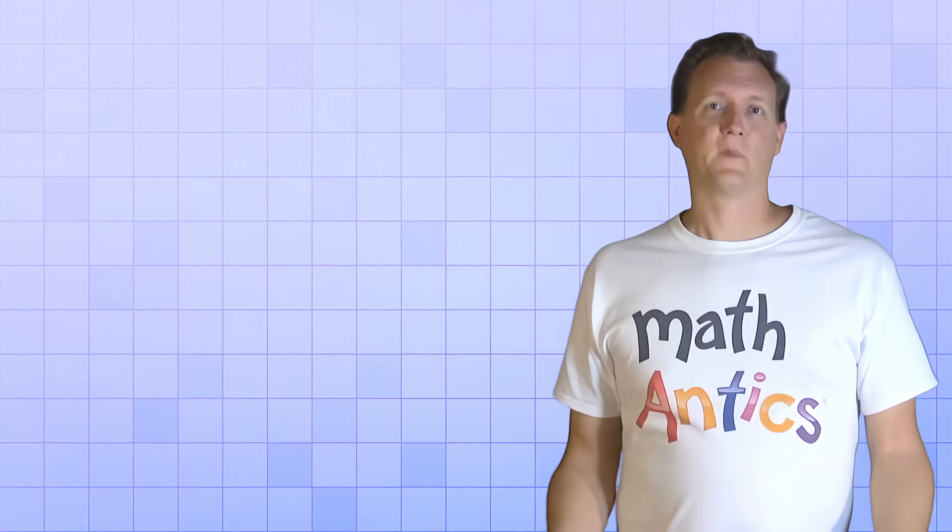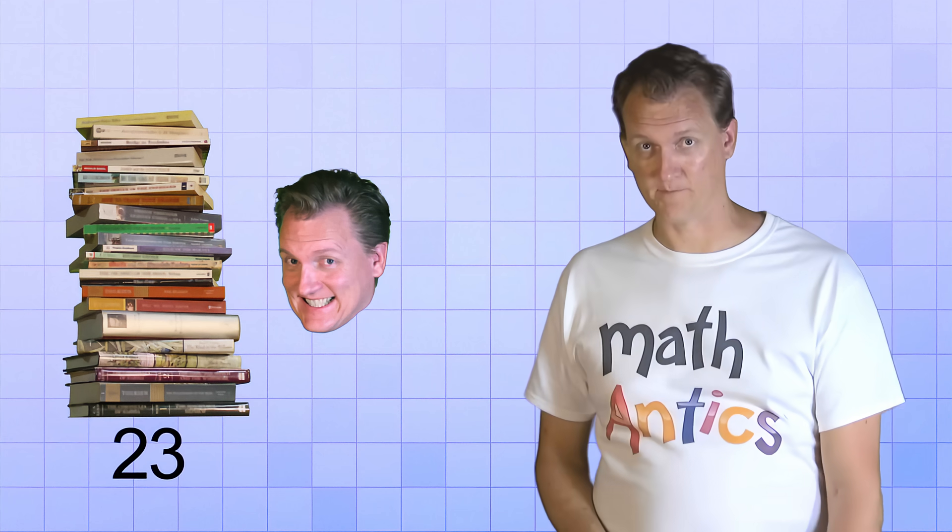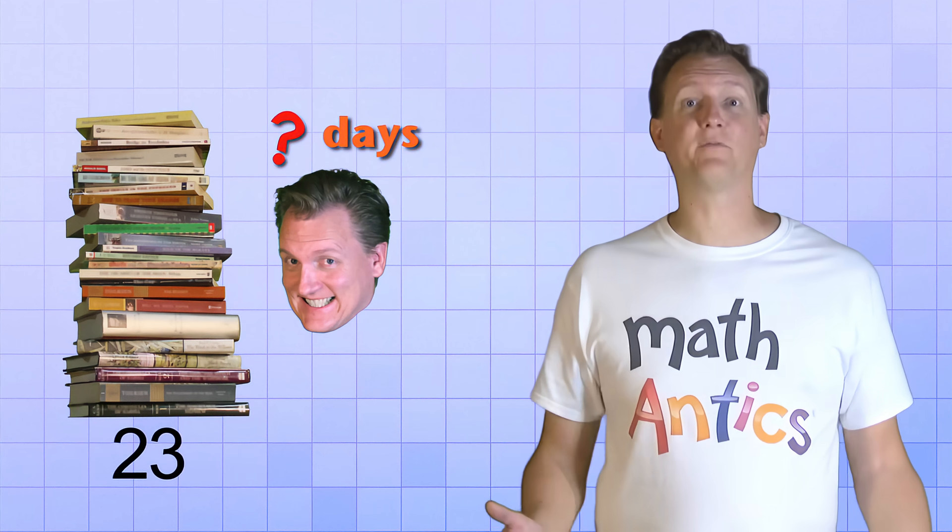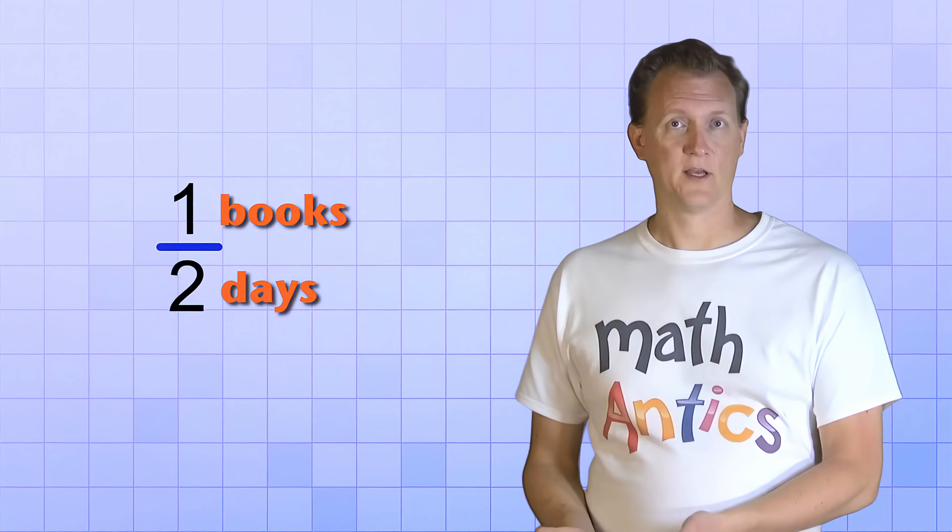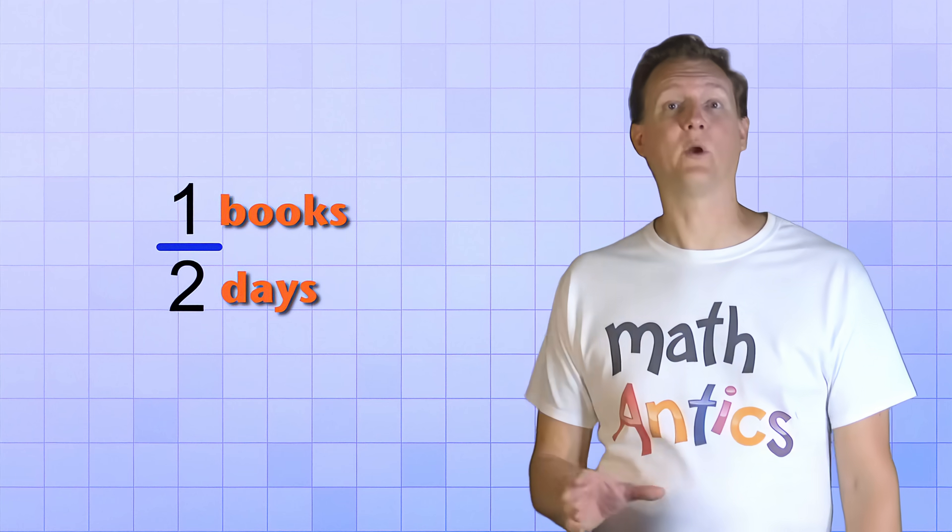For example, let's suppose that our student, who's a good reader, has a big stack of books that they want to read. 23 books to be precise. And they want to know how many days it will take them to finish. How do we figure that out? Well, let's start with what we do know. We know that they can read 1 book in 2 days. So let's take that ratio and set up an equivalent ratio for 23 books.